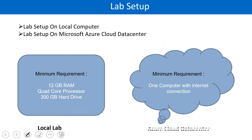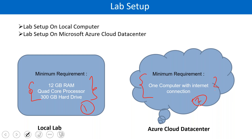There are two types of lab setup: either a local setup on your own machine, or using Microsoft Azure cloud data center. If you plan to install the SCCM lab locally, you need a minimum of 12 GB of RAM, a quad-core processor, and 300 GB of hard drive space. If you don't have that configuration, you can use Azure cloud — you get a 30-day free trial. After 30 days, if you'd like to continue, you'll have to pay for it.